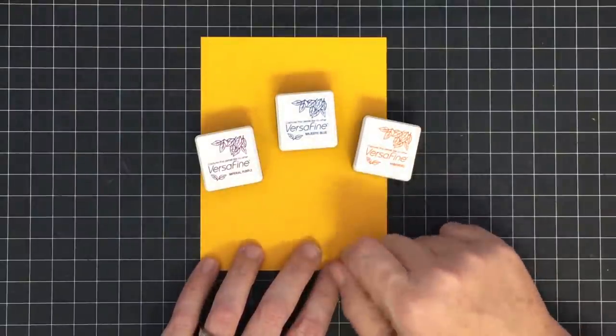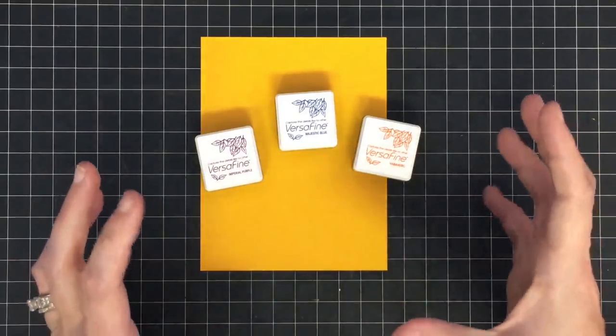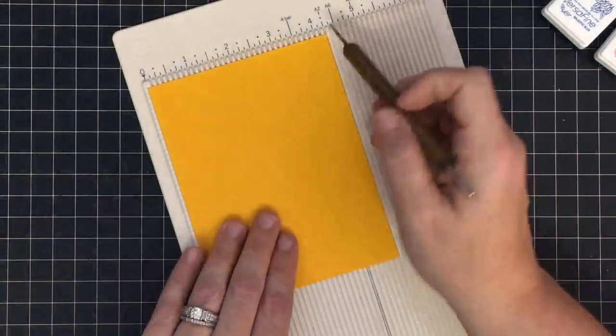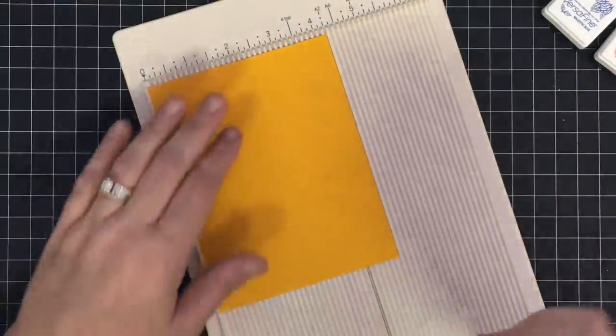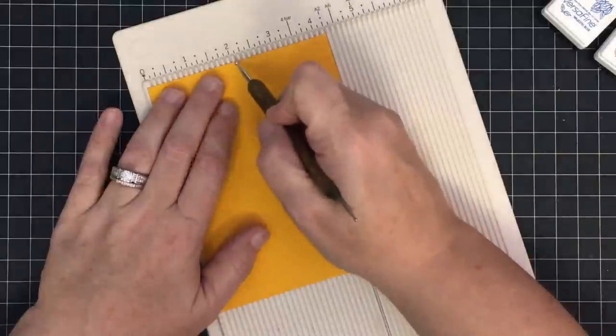My husband loves sweater vests, and as soon as I saw this it made me think of a sweater vest that Vince would wear. This piece of cardstock is four and a quarter by five and a half, so it's the entire front of an A2 card. I'm going to make two score marks. The first one is at two and one-eighth.